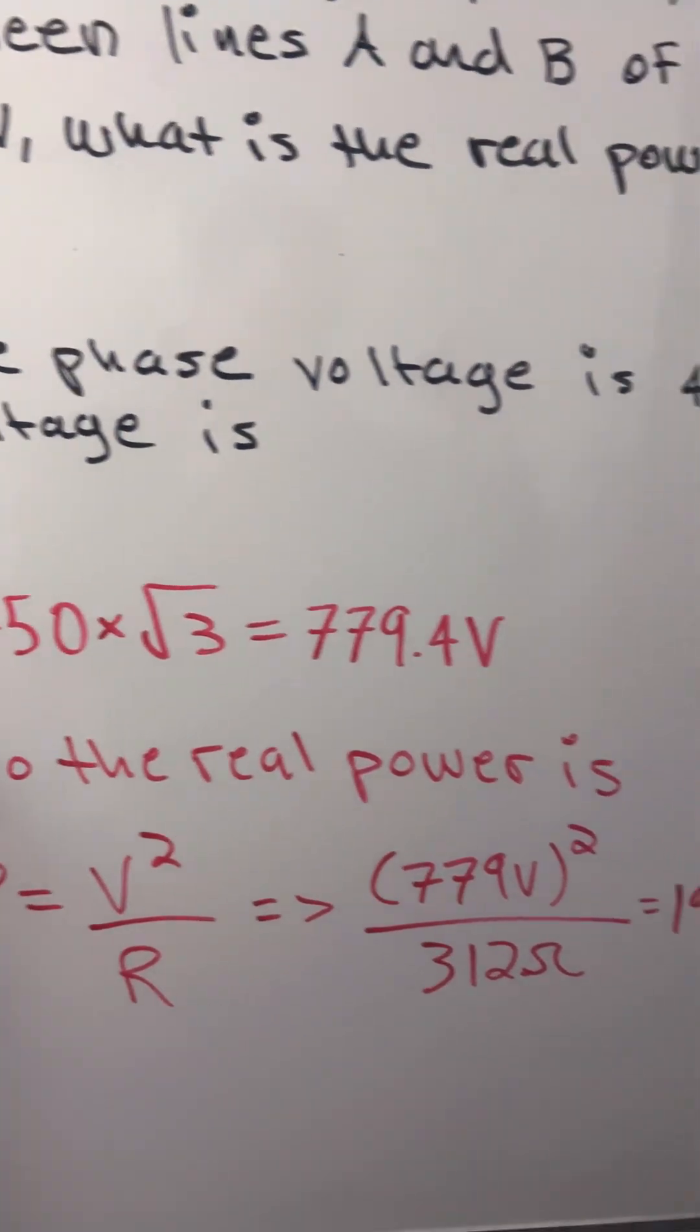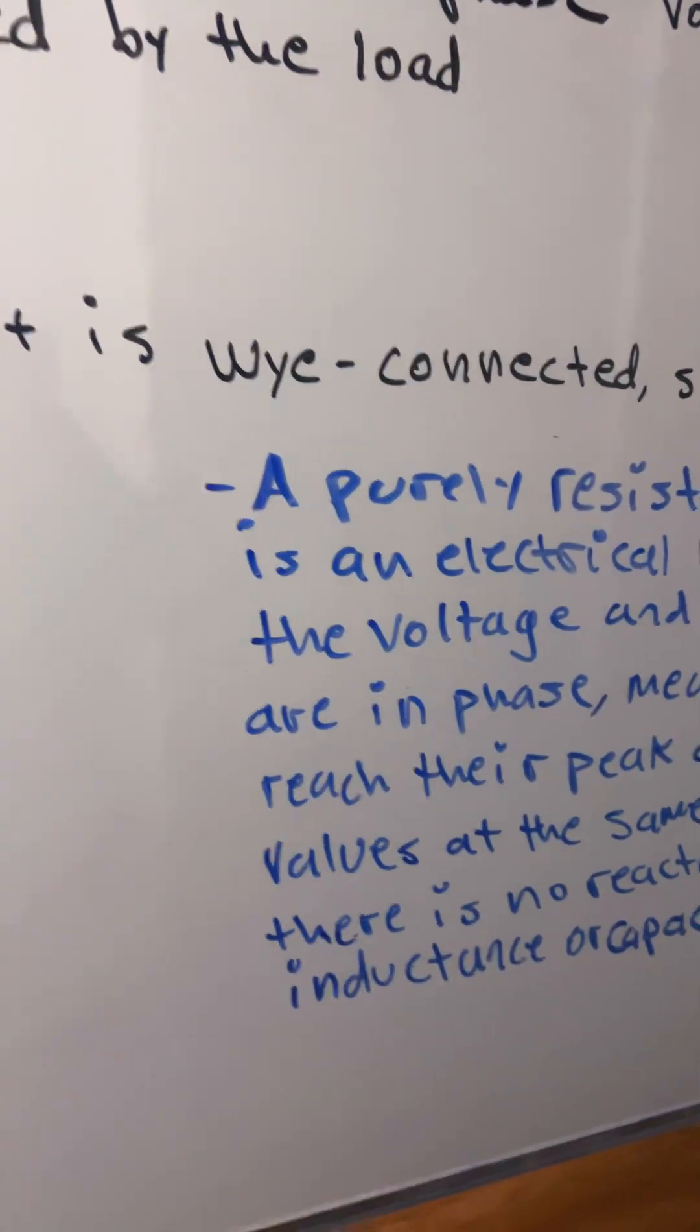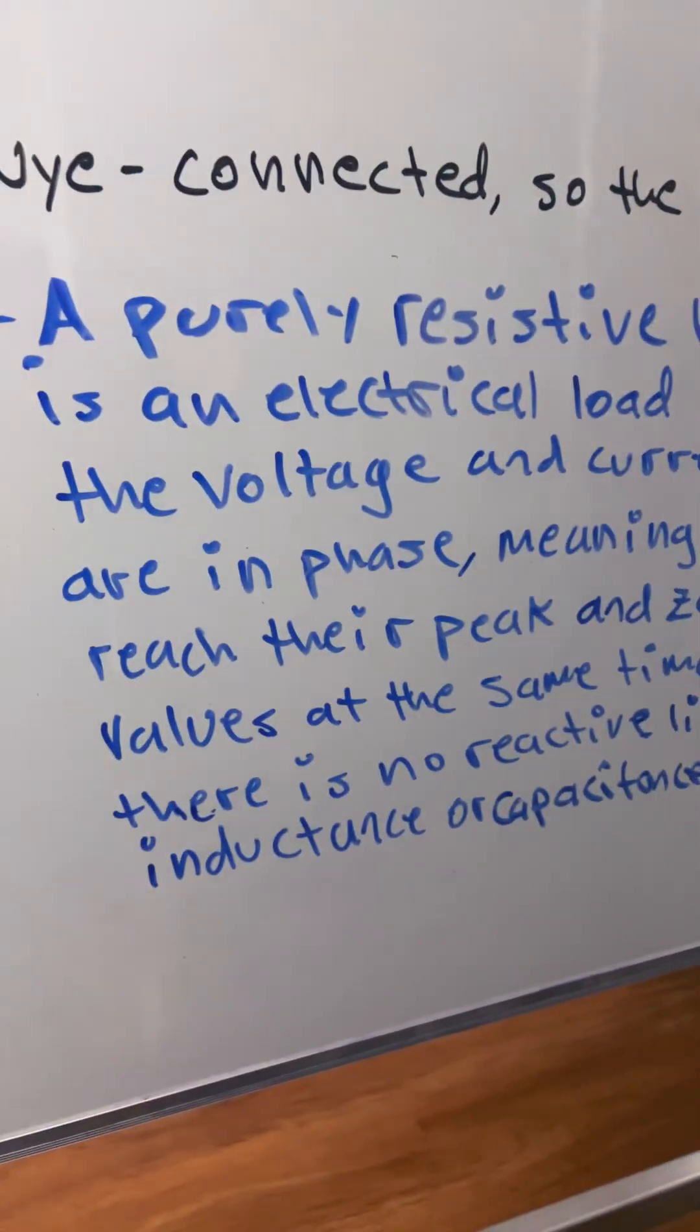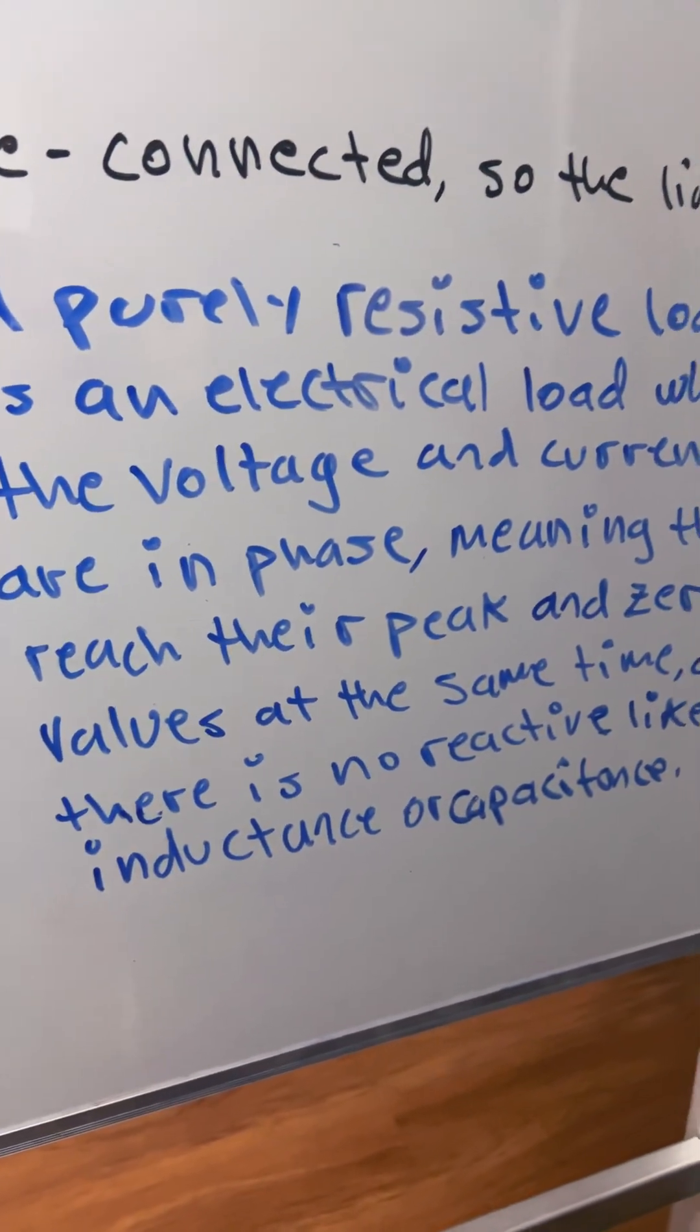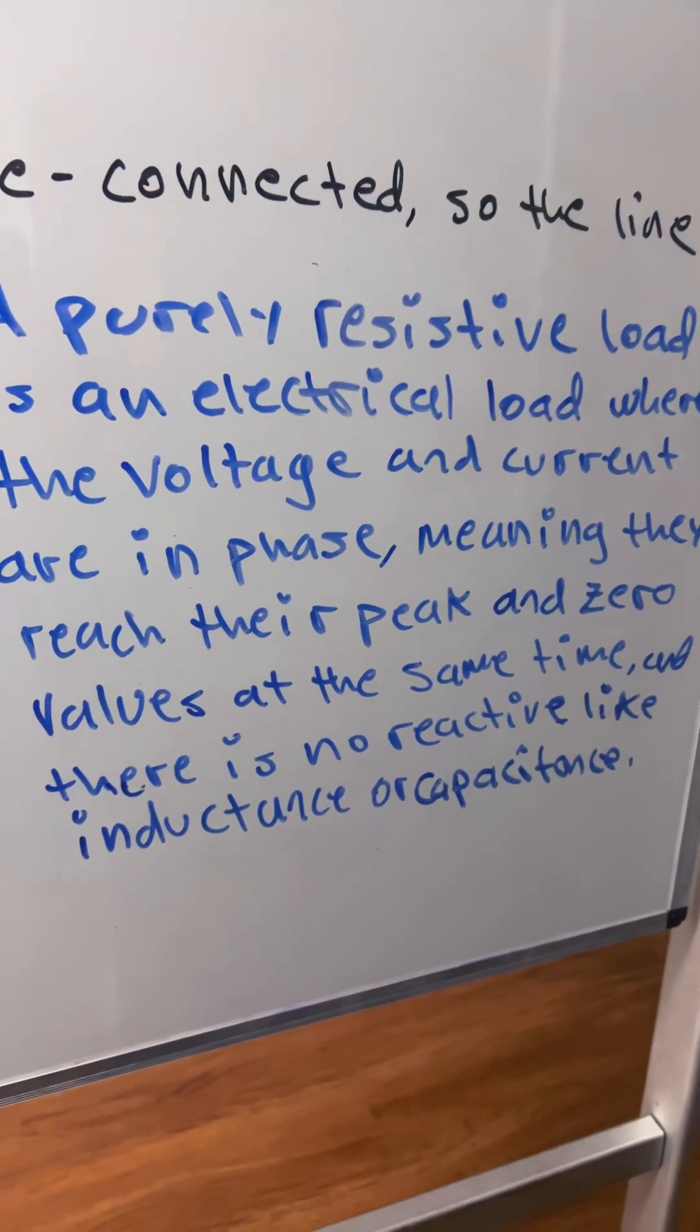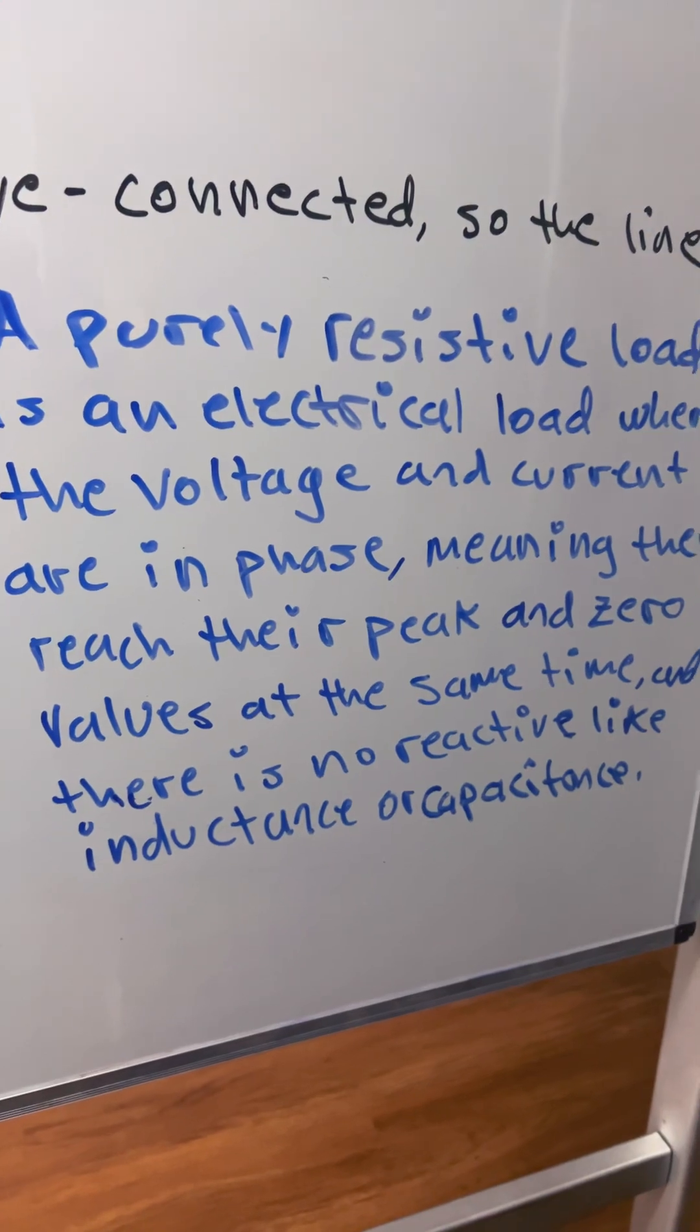But first we need to understand what's a purely resistive load. A purely resistive load is an electrical load where the voltage and current are in phase, meaning they reach their peak and zero values at the same time, and there's no reactive like inductance or capacitance.